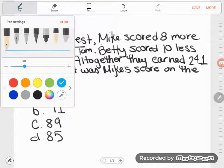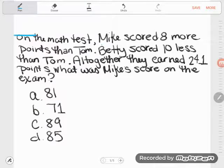Let's take a look here. On the math test, Mike scored 8 more points than Tom. Betty scored 10 less than Tom. Altogether they earned 241 points. What was Mike's score on the exam? Now take a look at these answers. Since my question was what was Mike's score on the exam, these are my four possibilities for Mike's score: either it was an 81, a 71, an 89, or an 85. Those are the only options because those are the only numbers they gave me.